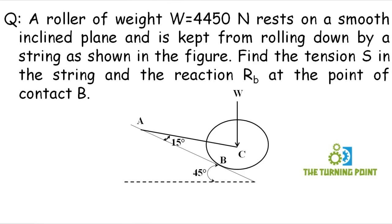A roller of weight W equal to 4450 Newtons rests on a smooth inclined plane and is kept from rolling by a string, as shown in the figure. Find the tension S in the string and the reaction RB at the point of contact B. See how to draw the free body diagram for the roller.